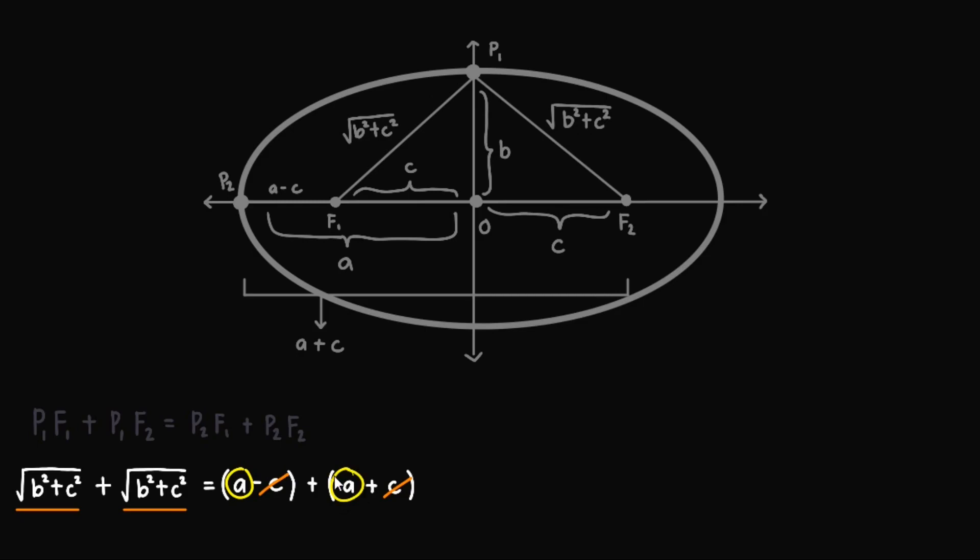Divide two both sides. And so the twos would cancel. And we'll be left with the square root of B squared plus C squared equals A. Take the square both sides. And we'll have B squared plus C squared equals A squared.